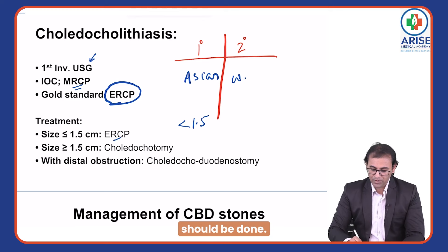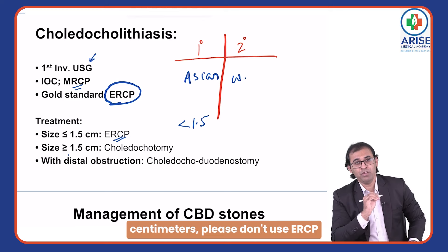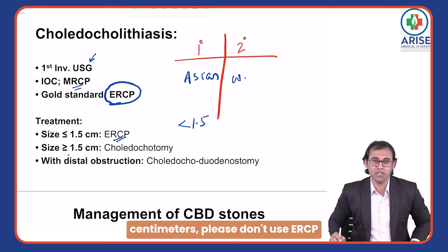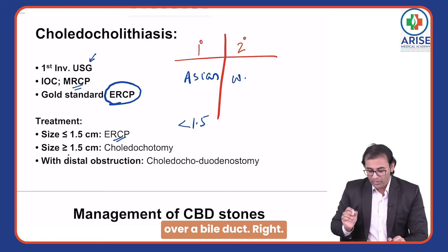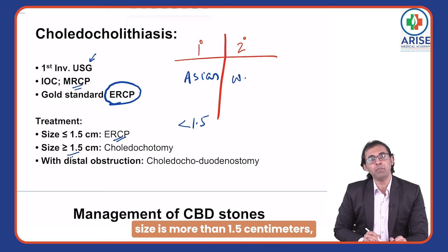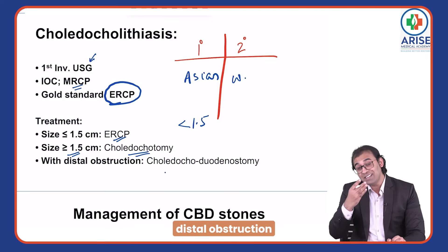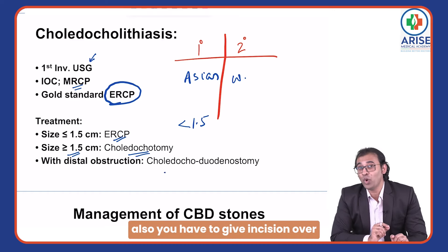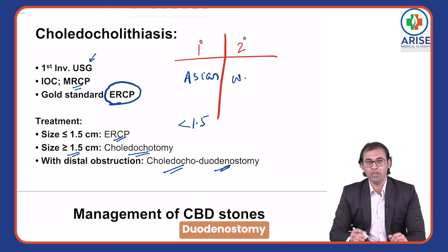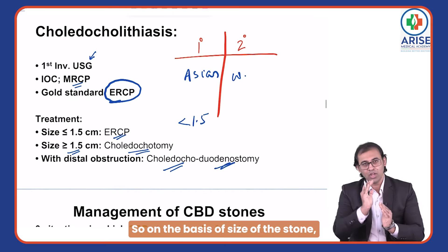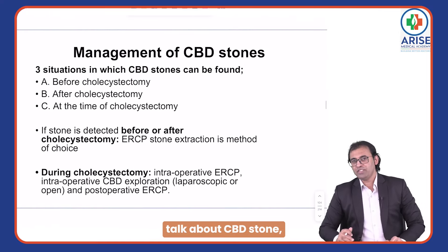ERCP should be done when the stone size is less than 1.5 cm. If the size is more than 1.5 cm, you have to operate — this is called choledochotomy. If there is also a distal obstruction, you give an incision over the duodenum as well, and the procedure is called choledochoduodenostomy.